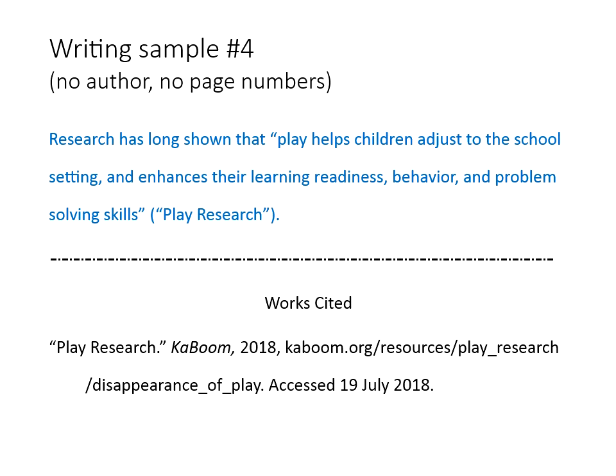If there is no author given for your source, use a shortened version of the title in your in-text citation, and exclude any initial articles. Use your judgment in deciding how many words of the title you need to be clear with your readers — often just one or two words is enough. Titles in your signal phrase or in parentheses still need quotation marks or italics, the same as they have in your Works Cited entry.